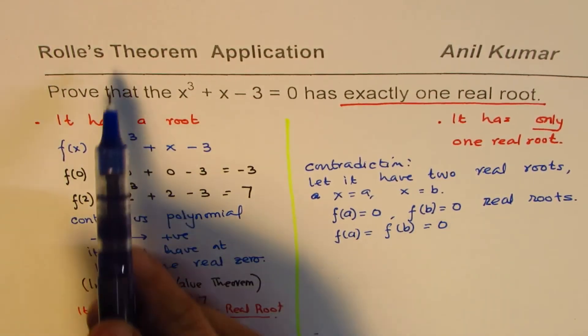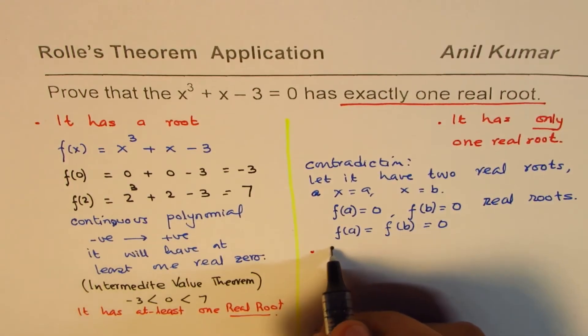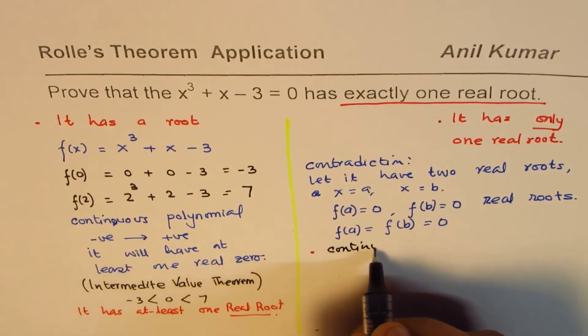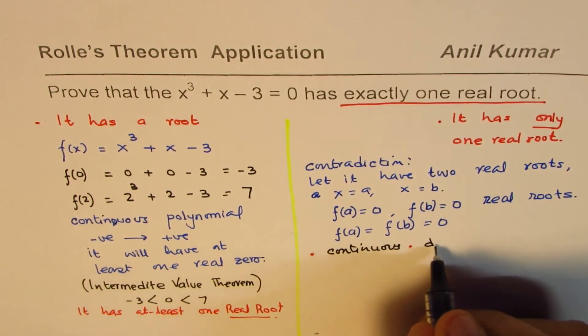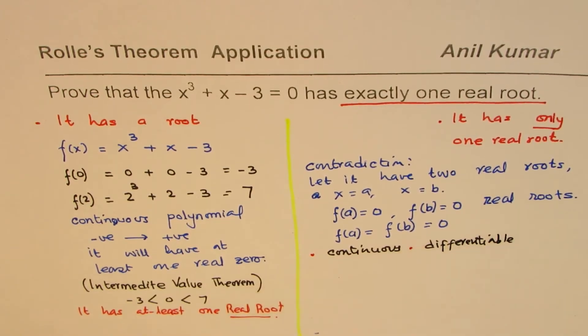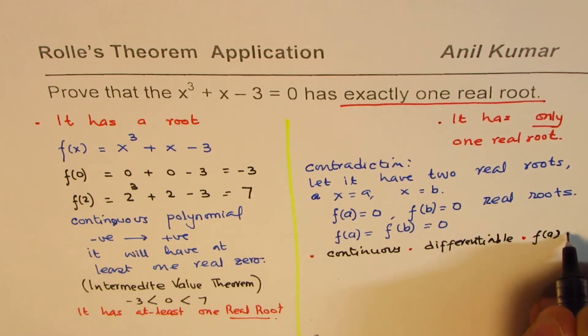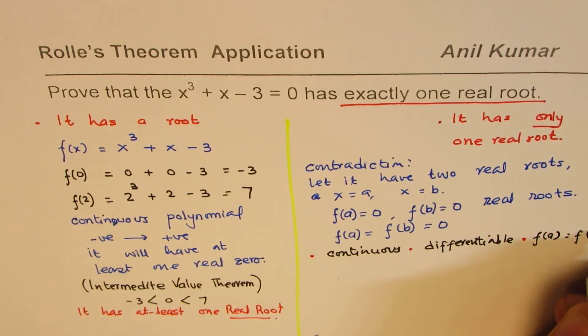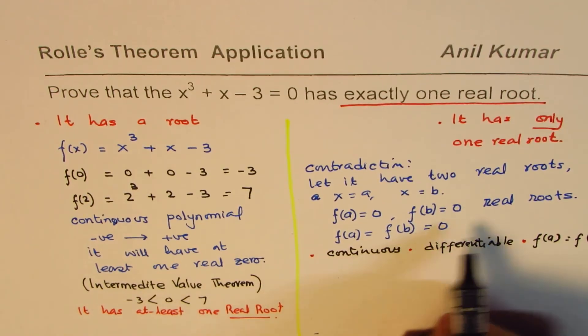So now we can apply Rolle's theorem. So what we have here is all the three conditions met. So the first condition met is that the function is continuous. Second is that it is differentiable. And the third is that f(a) equals to f(b). So a and b are any two points, which we don't know, but let us assume these are the roots. So these three conditions are met.